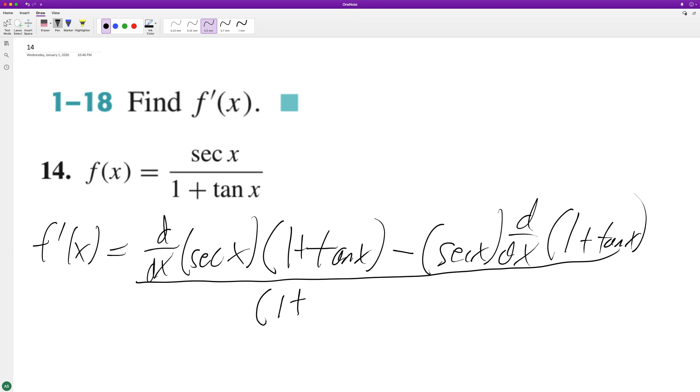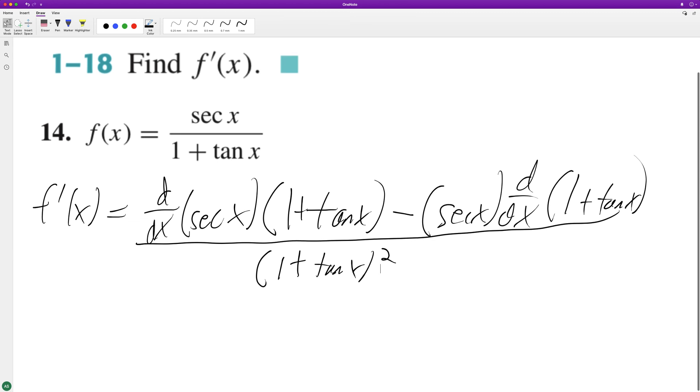The next few steps I'm not going to write the denominator just to save space. So the derivative of the secant is going to be secant tangent minus the derivative of 1 plus tangent. Derivative of tangent is secant squared.